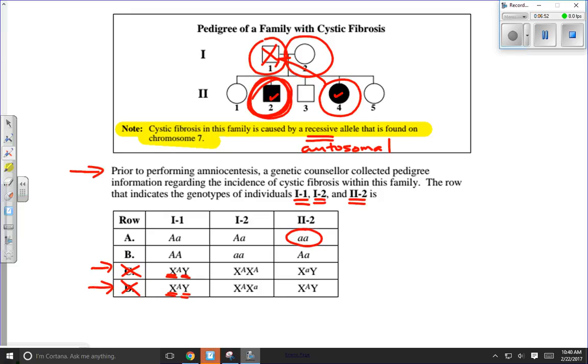Now, just to double check, we'll make sure that individual 1-1 and 1-2 can both be big A, little A. As a matter of fact, they kind of have to be big A, little A, because neither one of them has cystic fibrosis, so they must have a dominant allele. And they have produced a child, or two children technically.